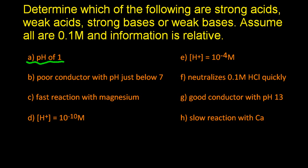So I've got the first one, pH of 1. It's below 7, so it must be an acid. And it's a very low pH, so it must be a strong acid.